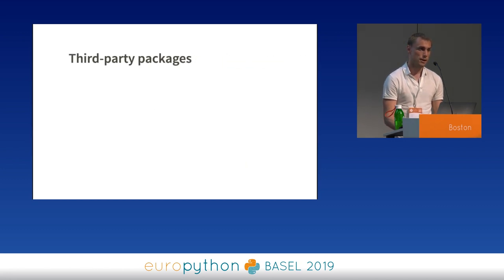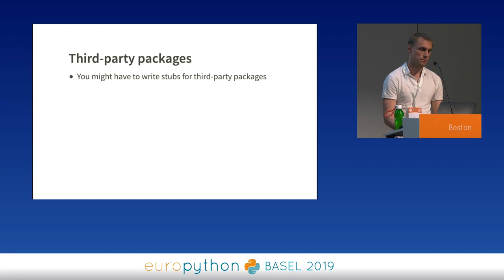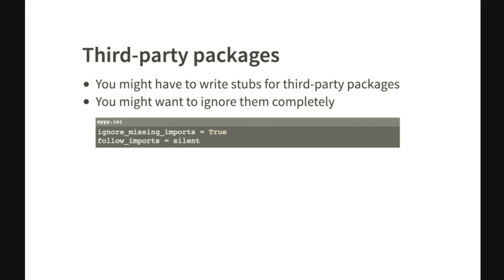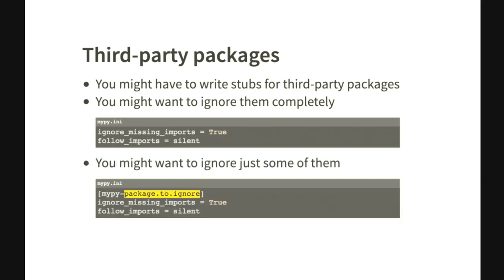When you use third-party packages that might not have type hints, there are a few options. You might write stubs, though that's something we don't really do. You might want to ignore all third-party packages, or better, very explicitly ignore just those that don't have annotations.